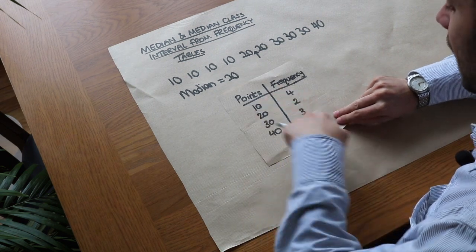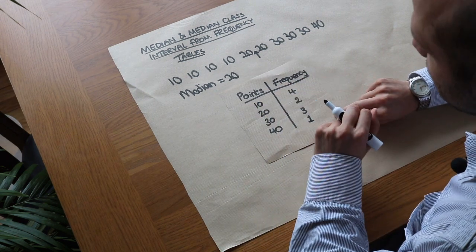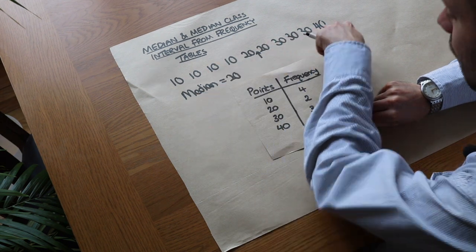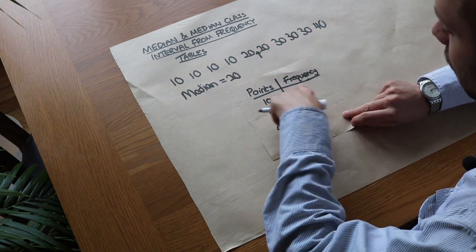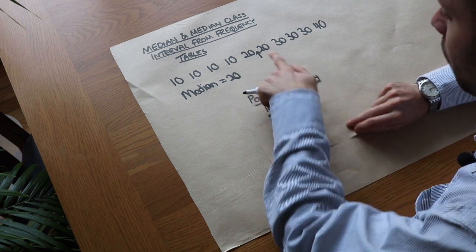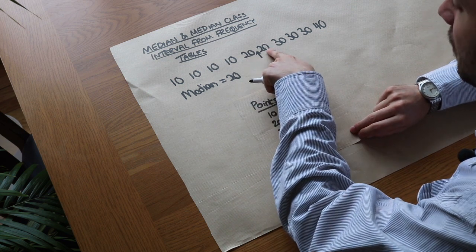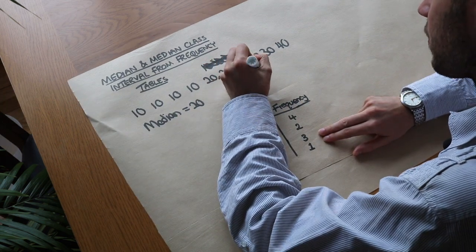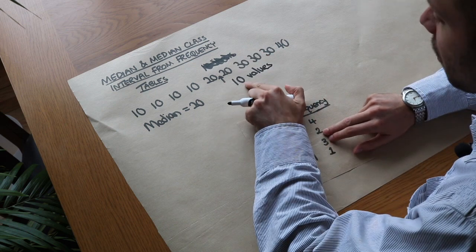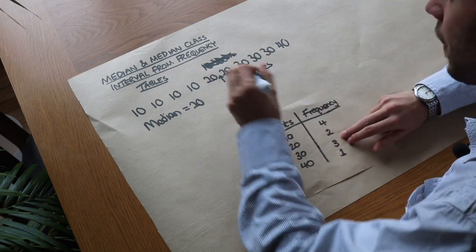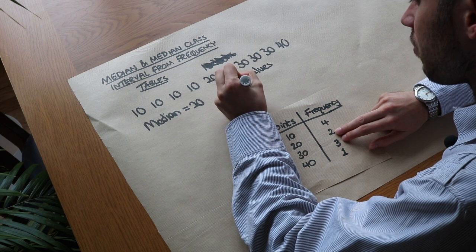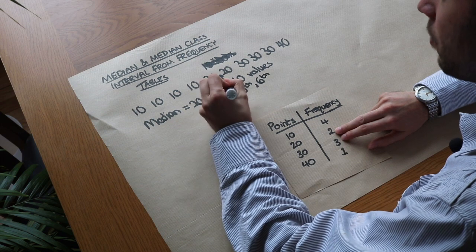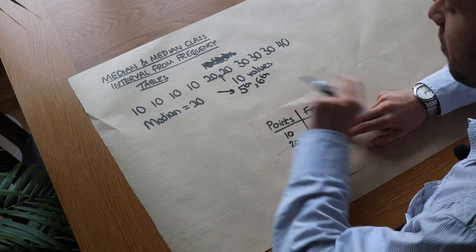If the frequency table was really big with very high frequencies, we wouldn't be able to do that. Notice we had ten values in total — the same as the total frequency — and we used halfway between the fifth and sixth value. If you've got an even number of items, in this case 10 values, you just halve it to get the fifth, then use halfway between that value and the next.